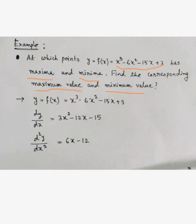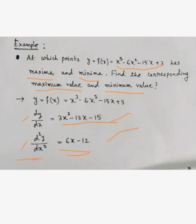First of all, you have to find the first order derivative and second order derivative — maxima and minima is an application of derivatives. The first derivative dy/dx is 3x² − 12x − 15. The second order derivative d²y/dx² is 6x − 12, since the derivative of the constant term −15 is zero.